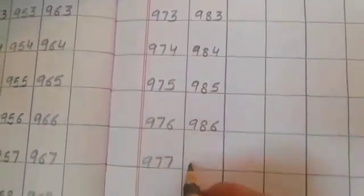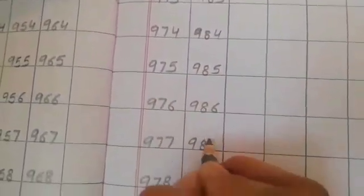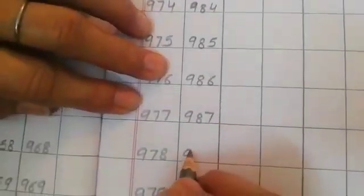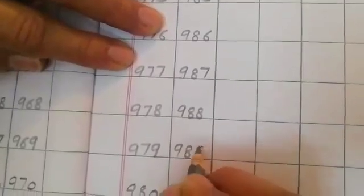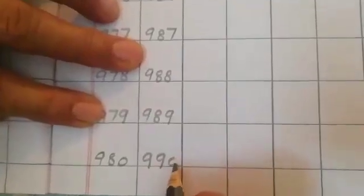986, 987, 988, 989. Then what comes after 989? 990.